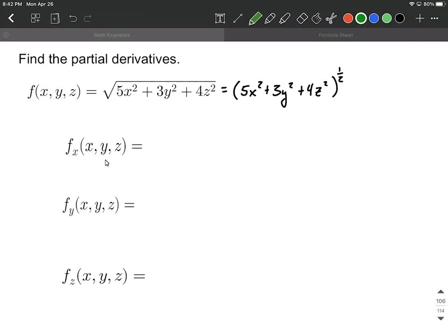So to do so, chain rule and power rule. We're going to bring down the exponent, copy down everything that started inside that set of parentheses, and reduce the exponent by one. So one-half minus one makes negative one-half for our new exponent.